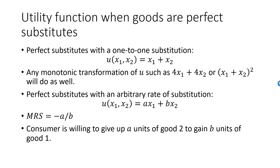For example, if one unit of good 1 is equivalent to two units of good 2, then MRS is minus 2, and we can pick a = 2 and b = 1, representing these preferences with the utility function u = 2x1 plus x2. An additional unit of good 1 will then increase utility exactly as much as two additional units of good 2.